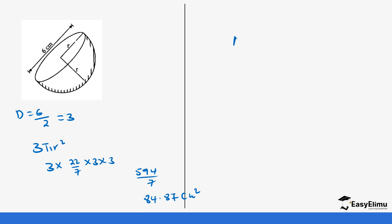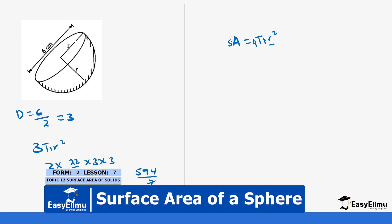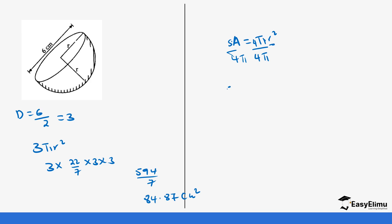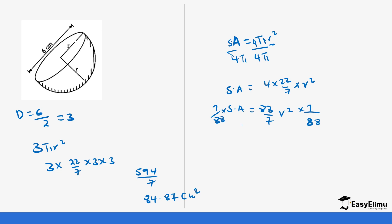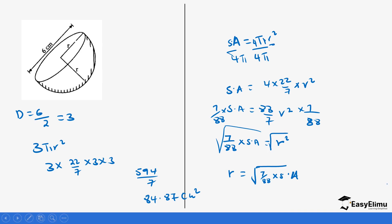For example, if you are given the surface area and need to find the radius for a sphere, start with SA = 4πr². Substituting π = 22/7: SA = (88/7)r². Multiply both sides by 7/88 to isolate r²: r² = (7/88) × SA. Then take the square root of both sides to get r = √[(7/88) × SA]. The same approach applies when you are given the surface area of a hemisphere.